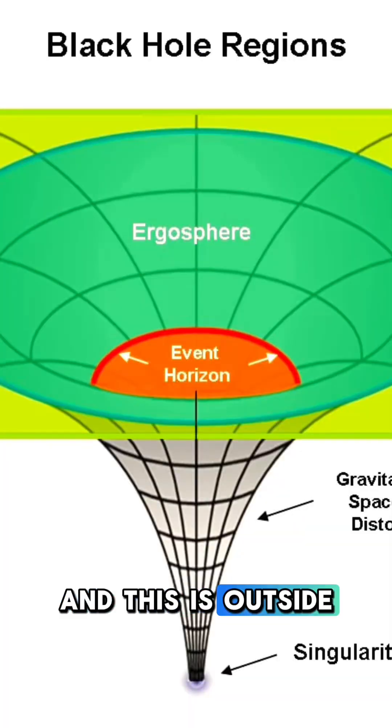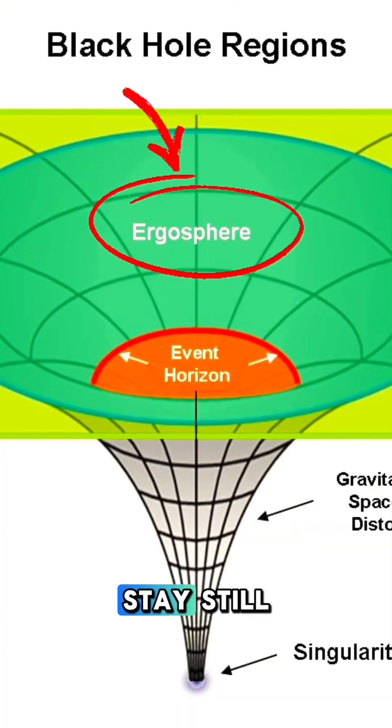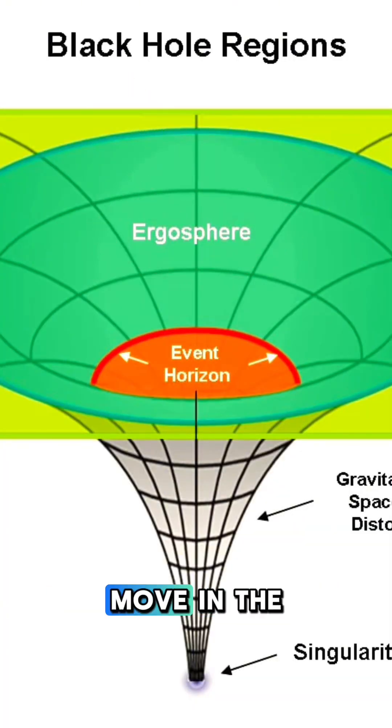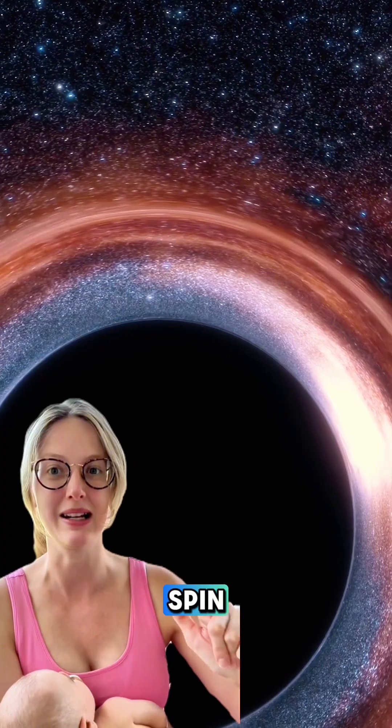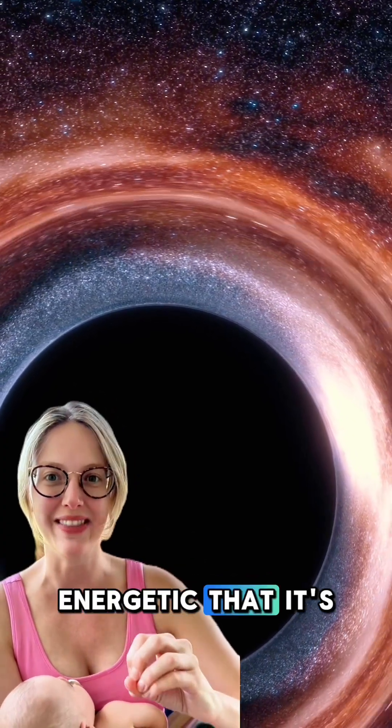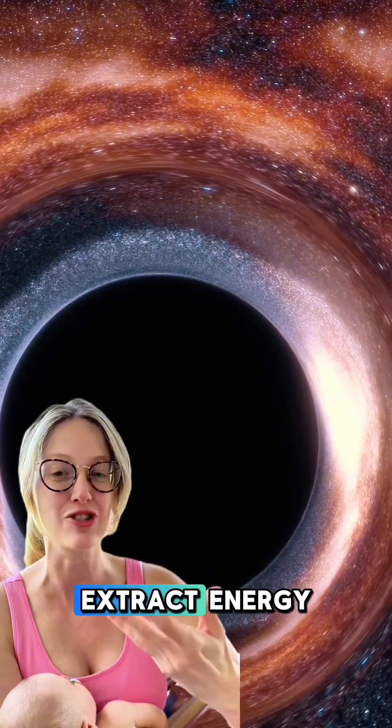Then you have the ergosphere, outside the event horizon where nothing can stay still. Even light has to move in the direction of the spin. This region is so energetic that it's possible in theory to extract energy from it.